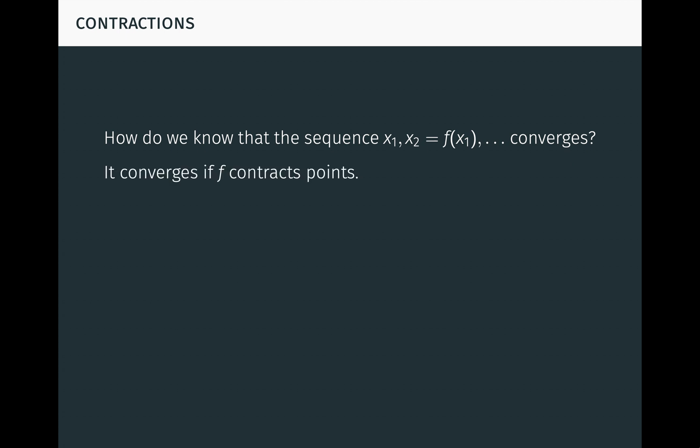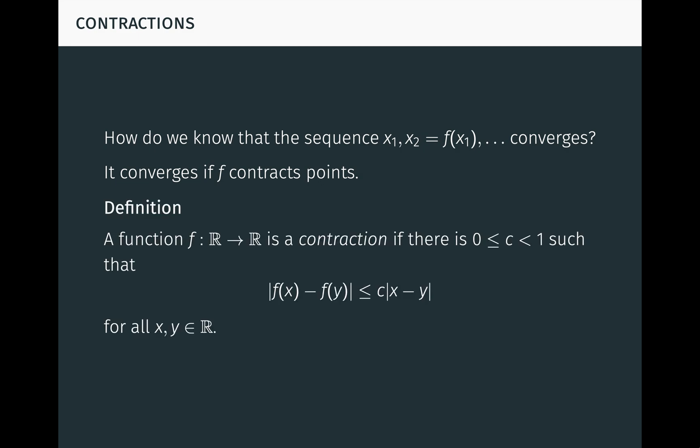One way to know is if f contracts points. A function f from r to r is a contraction if there is a constant c less than 1 such that the distance between f of x and f of y is at most c times the distance between x and y for all points x and y in r. Intuitively, a contraction decreases the distance between points. A contraction is always continuous, in fact uniformly continuous.